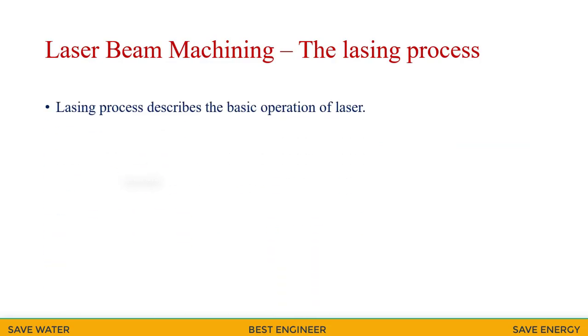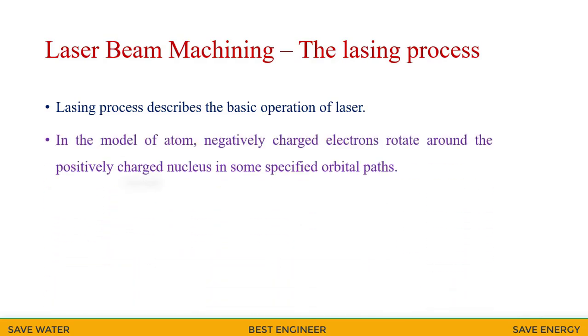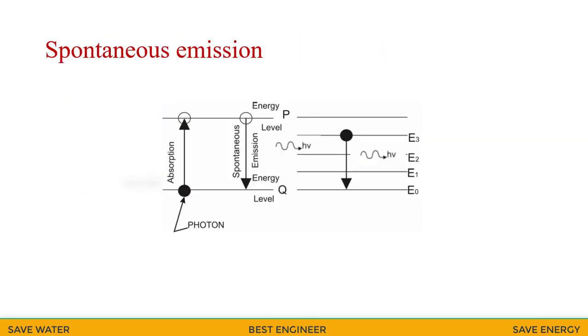Let me see the lasing process. Lasing process describes the basic operation of laser. In the model of atom, negatively charged electrons rotate around the positively charged nucleus in some specified path. Each of the orbital electrons is associated with a unique energy level. This is emission. Here, the electron of the ground state can be excited to a higher state of energy by absorbing energy from external source like increase in electronic vibration, at elevated temperature through chemical reaction, as well as via absorbing the energy of photons.